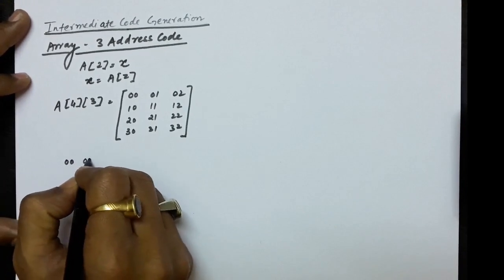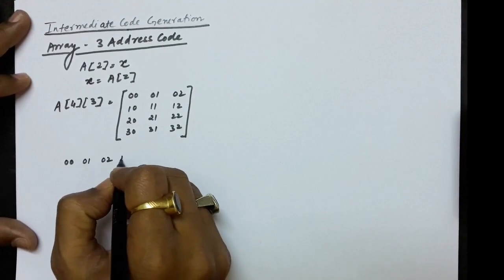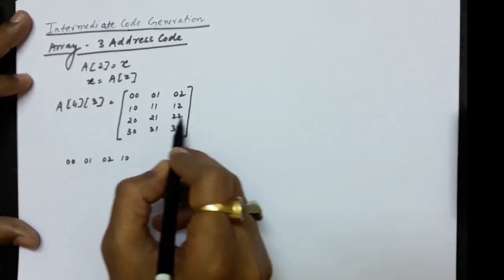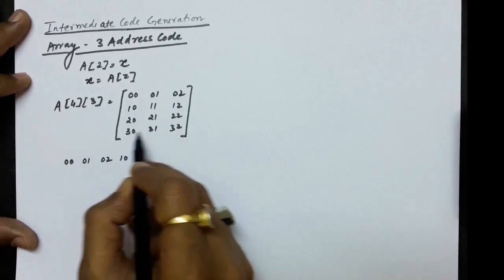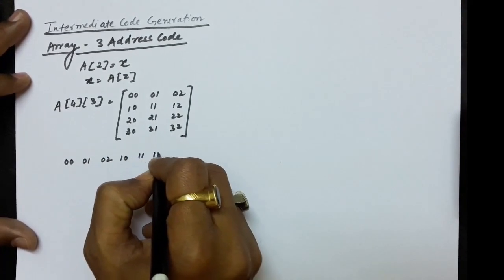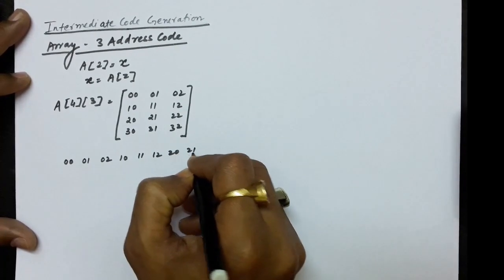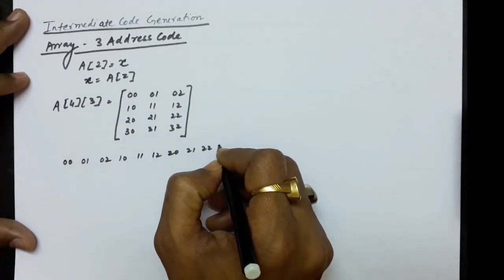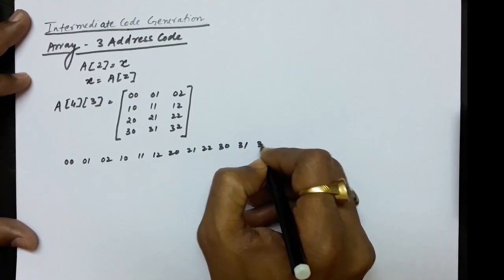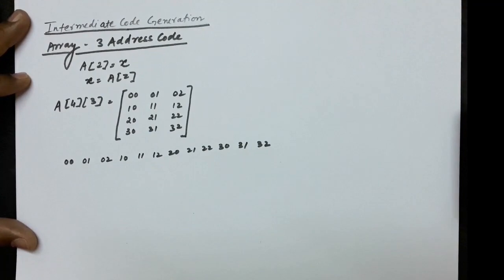In the storage process, the 2D array is treated as a single dimension array. So first [0][0] is stored, then [0][1], then [0][2] — all elements of the first row — then all elements of the second row, then all elements of the third row, and all elements of the fourth row. So this is treated as a single dimension array.